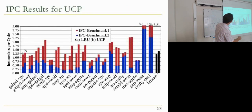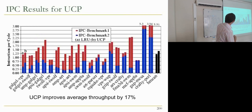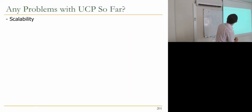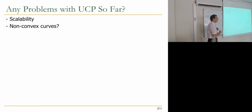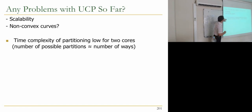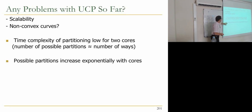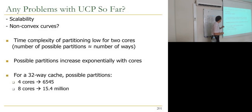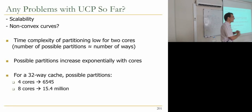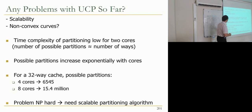These are individual performance results, and this also improves fairness. Looking at IPC throughput, there are scalability problems because this approach has non-convex curves. The time complexity of partitioning for two cores has possible partitions similar to the number of ways, but possible partitions increase exponentially with the number of cores. For a 32-way cache with four cores you get many partitions; with eight cores even more. You don't want to exhaustively search all possible A values — the problem is NP-hard.